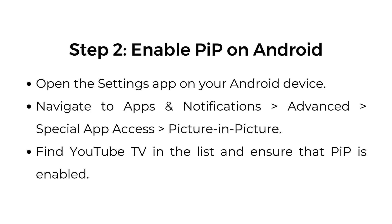Step number two: enable picture-in-picture on Android. Open the Settings app on your Android device. Navigate to Apps, Notifications, Advanced, Special App Access, Picture-in-Picture. Find YouTube TV in the list and ensure that PIP is enabled.